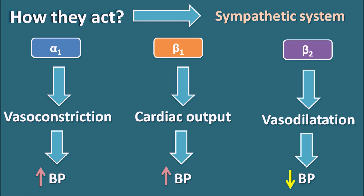Vasodilation results in a fall in blood pressure. The effect of catecholamines on systolic and diastolic blood pressure depends on their relative selectivity toward alpha-1, beta-1, and beta-2 receptors. Alpha-1 and beta-1 receptors mainly affect systolic blood pressure, while beta-2 receptors mainly affect diastolic blood pressure. If a catecholamine has more alpha-1 or beta-1 action, it has more effect on systolic; more beta-2 action affects diastolic.